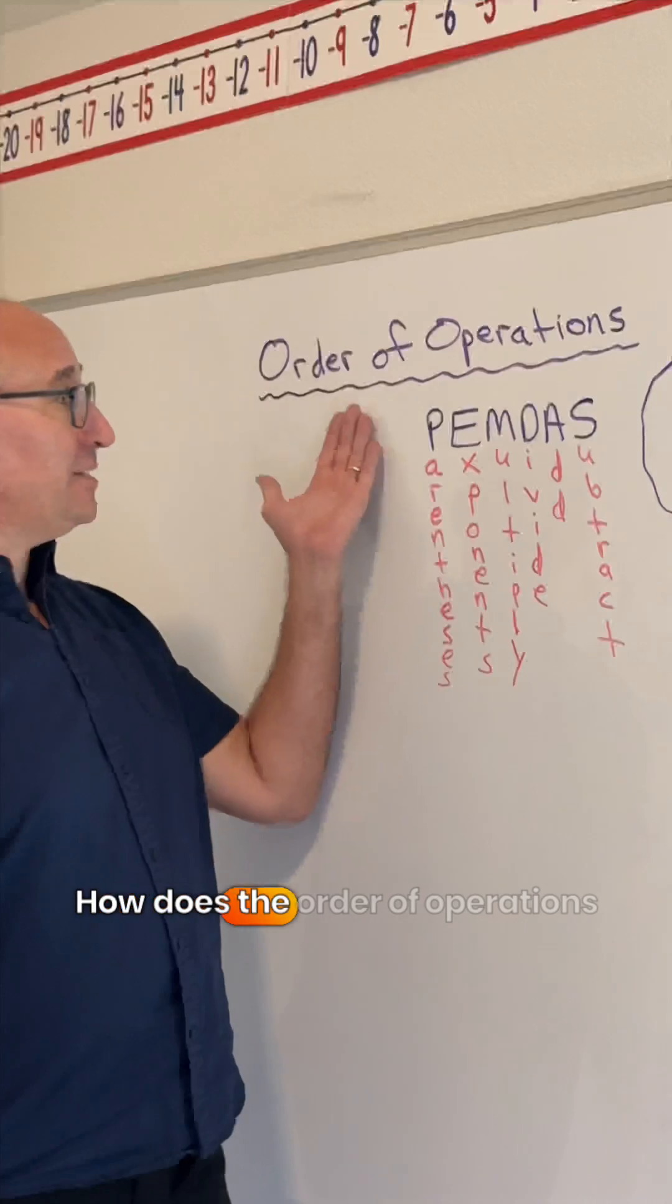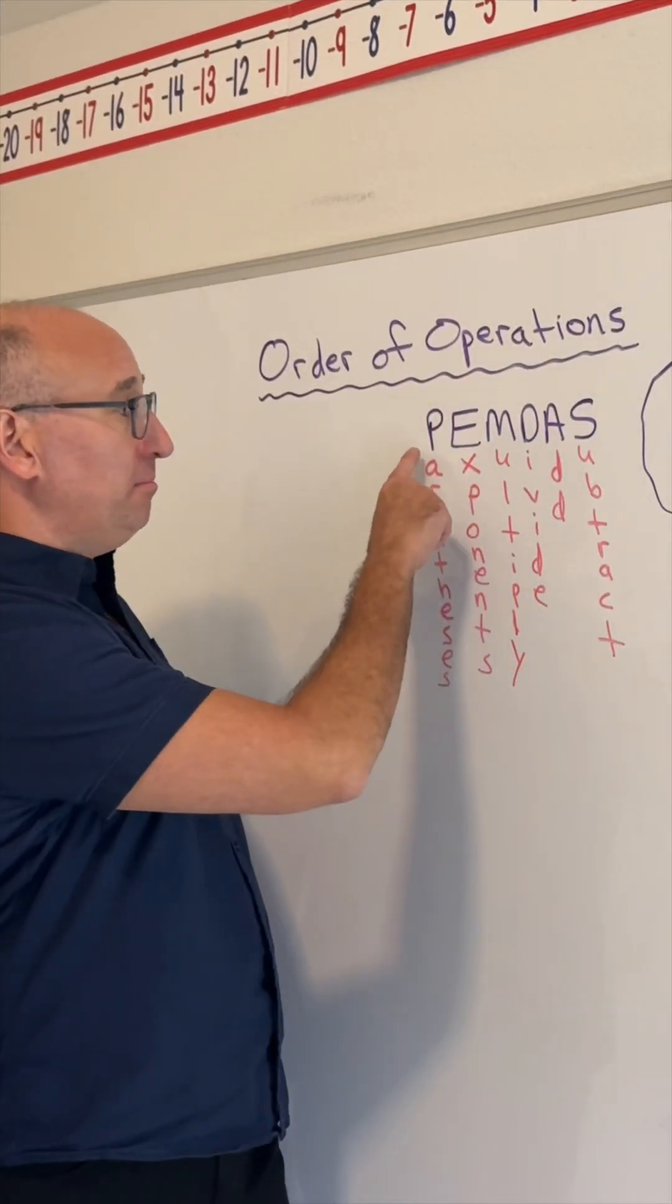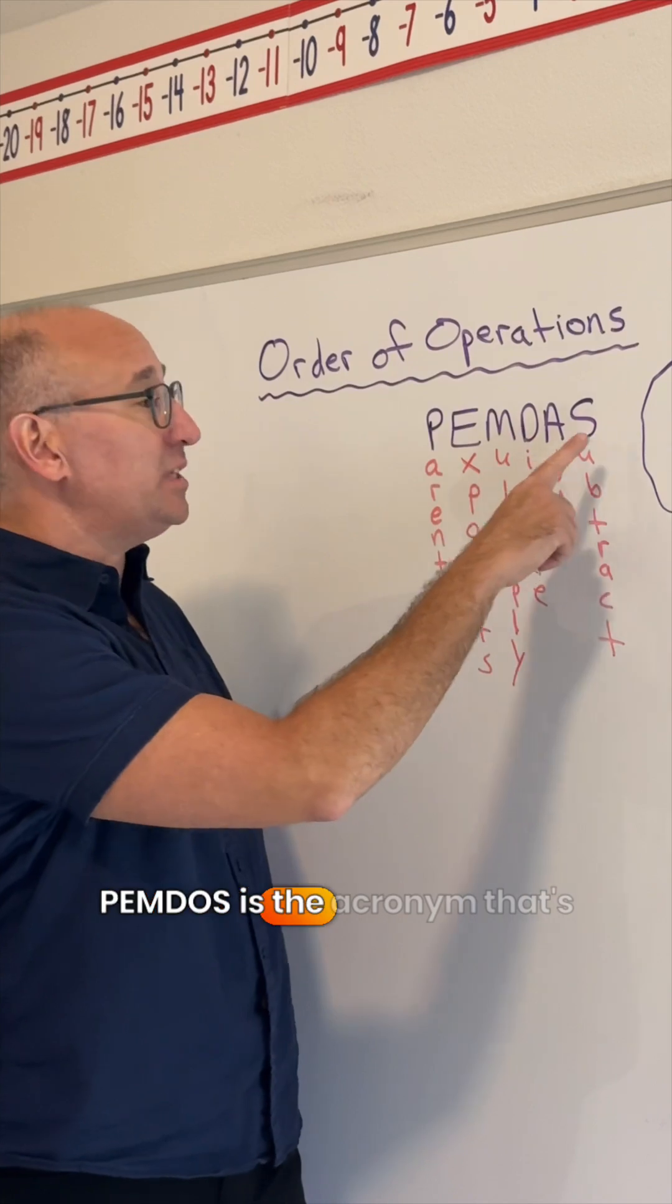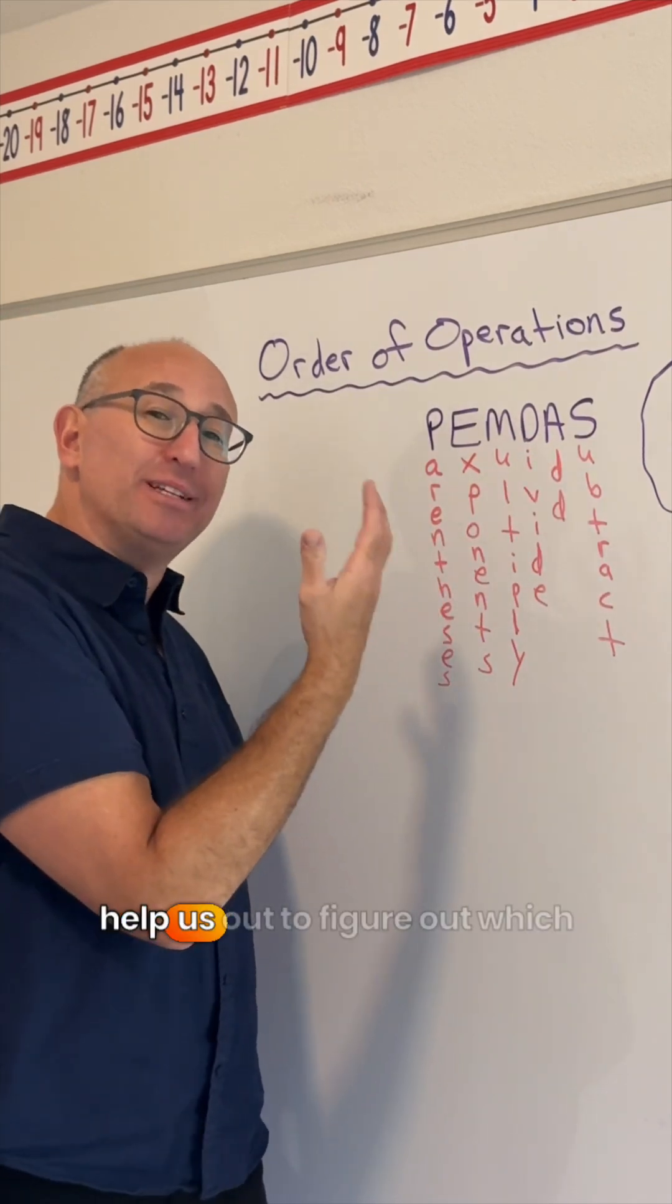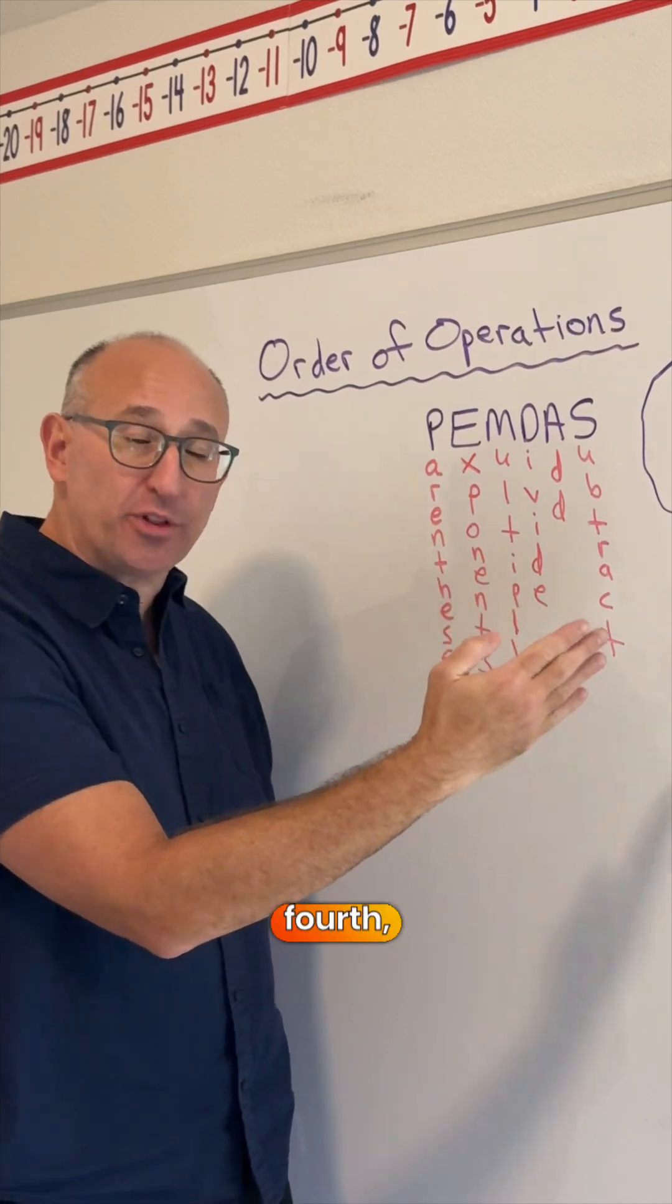How does the order of operations work? Well, I'm sure a lot of your parents have heard this. PEMDAS. PEMDAS is the acronym that's going to help us out to figure out which operation I do first, second, third, fourth, and fifth.